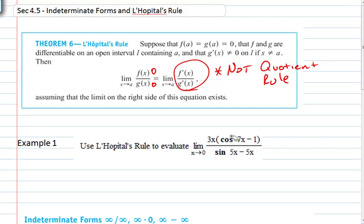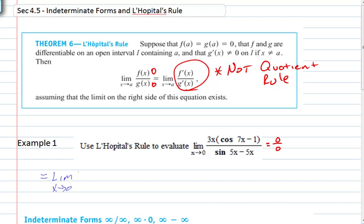What this says is: if by direct substitution you're in an indeterminate form and we plug in 0 we end up with 0 over 0, L'Hopital's rule says the limit will be equivalent to the limit as x approaches 0 of the derivative of the numerator. What rule do we have to use when we take the derivative of the numerator? Product rule.